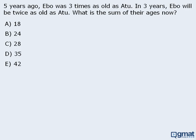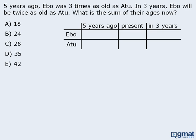So to begin, let's create a table with all three time periods as columns. Now there are several ways to approach this question. I am going to use two variables, even though it can be solved using one variable. Let's begin with their present ages. Since we have no information about their present ages, let's let E represent Ibo's present age, and let A represent Attu's present age.